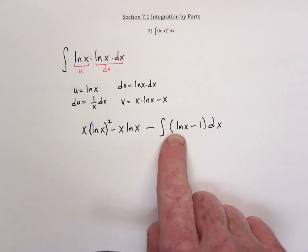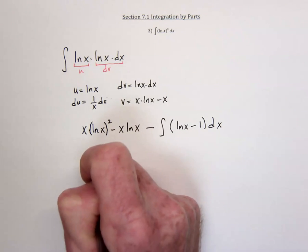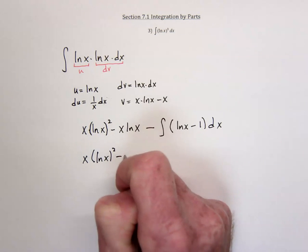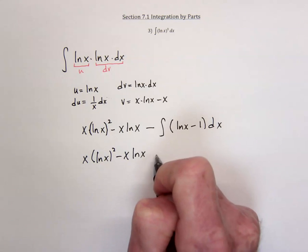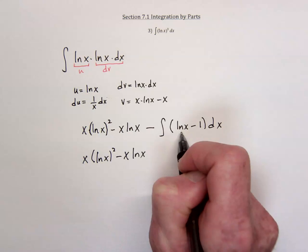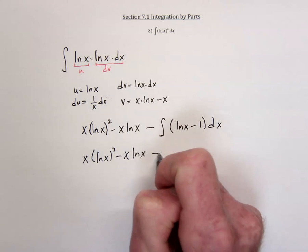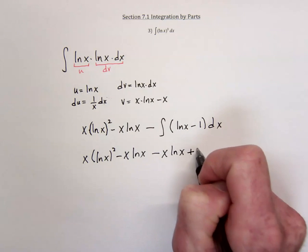So once again, here's the integral of the natural log of x. So let's see, x natural log of x is squared minus x natural log of x. And then this is going to be x natural log of x minus x with a negative sign applied to it. So it's going to be minus x natural log of x plus an x.